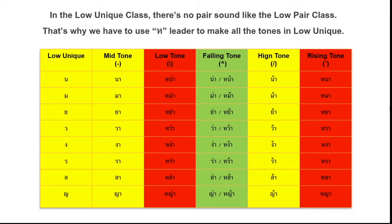For tone mark 2, you will see the tone mark and we pronounce one step forward. The tone mark 2 gives falling tone, and we read it as นา.